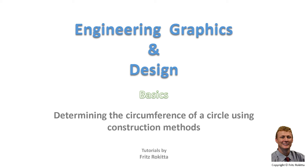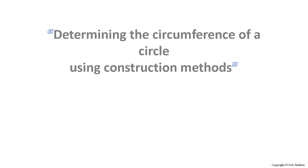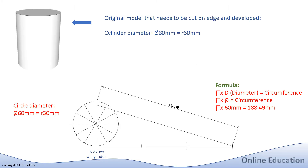In this tutorial, I'm going to demonstrate how to determine the circumference of a circle using construction methods. We will be making use of our drawing board and drawing instruments like the compass and set squares to do the construction. We will make use of a cylinder with a diameter of 60 mm as a base model from which we want to determine the circumference.